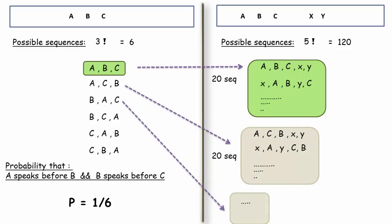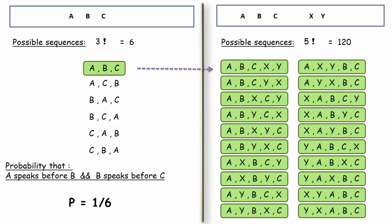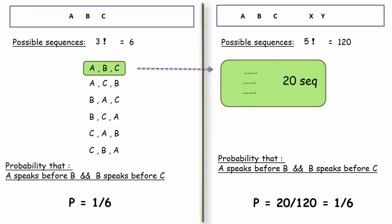That means the valid sequence on the left side will be mapped to 20 valid sequences on the right side where A speaks before B and B speaks before C. For verification purpose, I have listed all 20 valid sequences in this case. You can pause and take a closer look. So, even in the right side case, the probability remains 1 by 6.